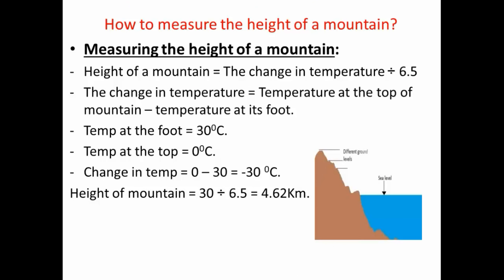How can we measure the height of a mountain depending on the change in temperature? The height of a mountain equals the change in temperature divided by 6.5. This value expresses the elevation above sea level, as we know that when we go up, temperature decreases by 6.5 degrees Celsius for each one kilometer above sea level. The change in temperature equals the temperature at the top of the mountain minus the temperature at its base.